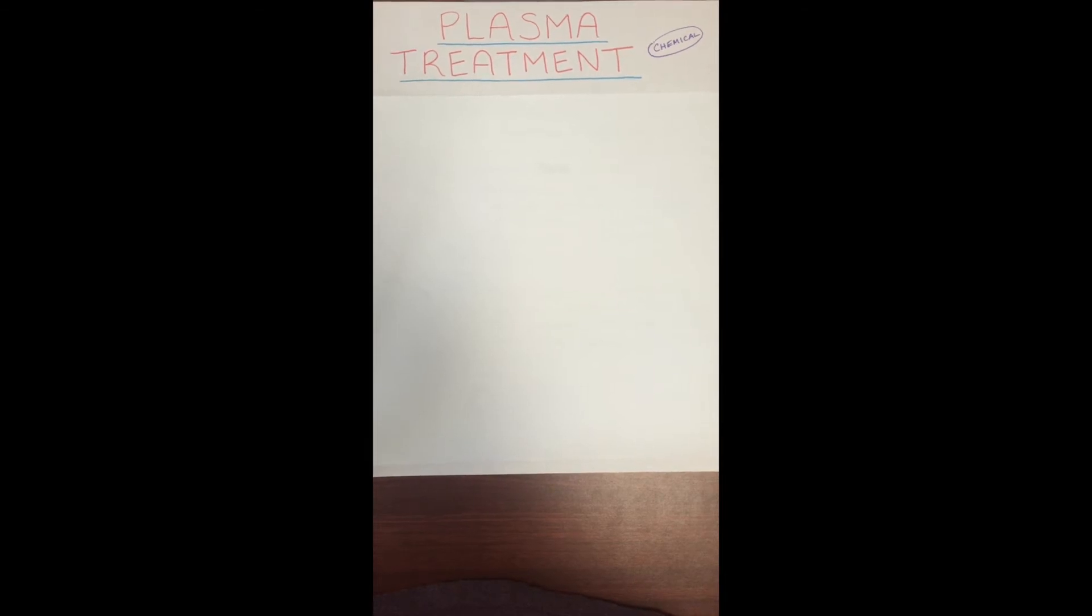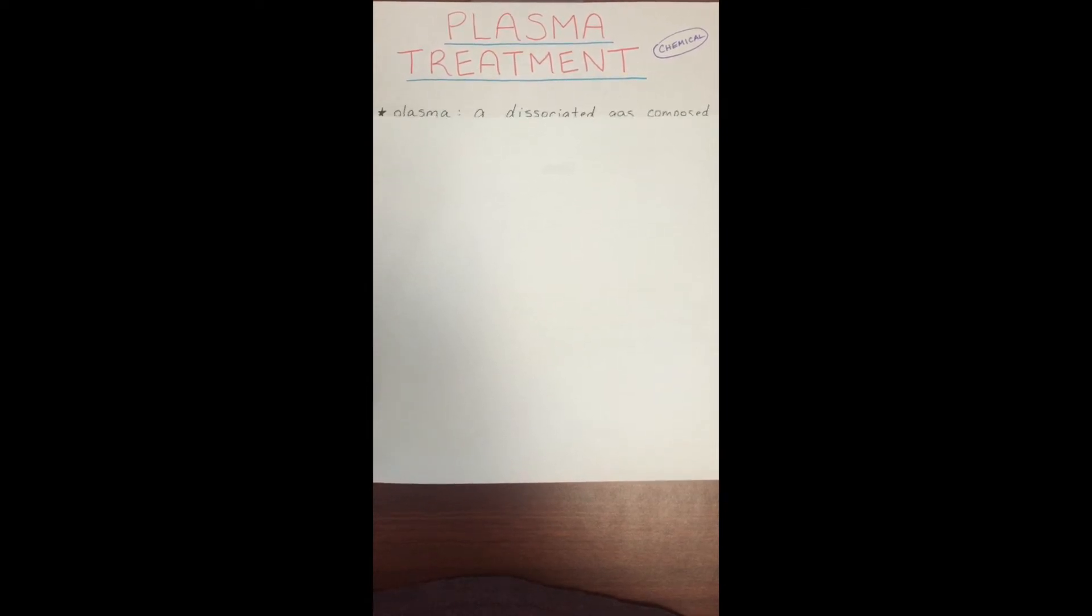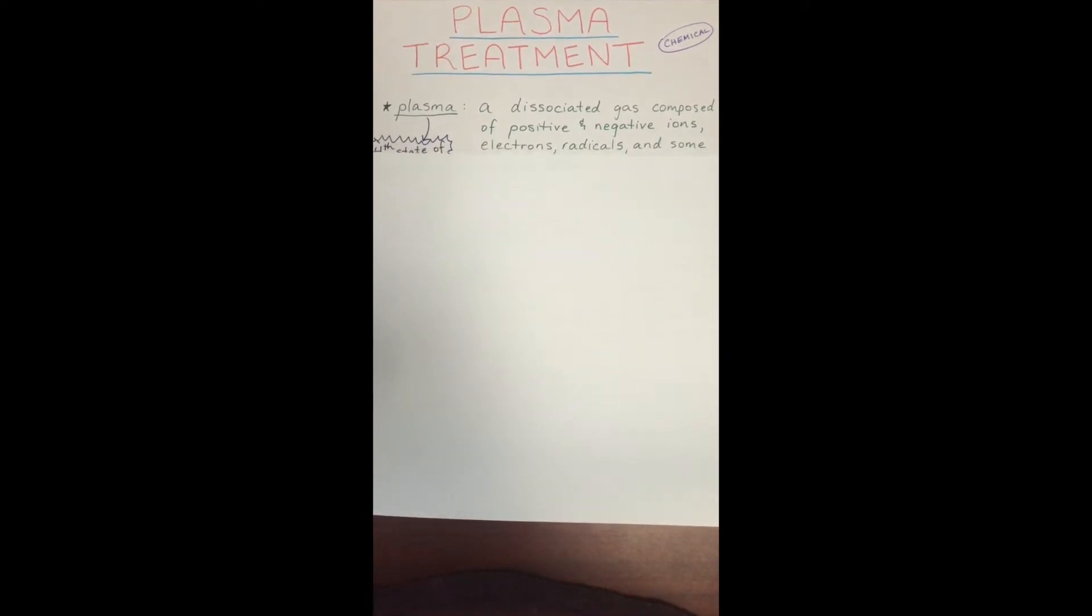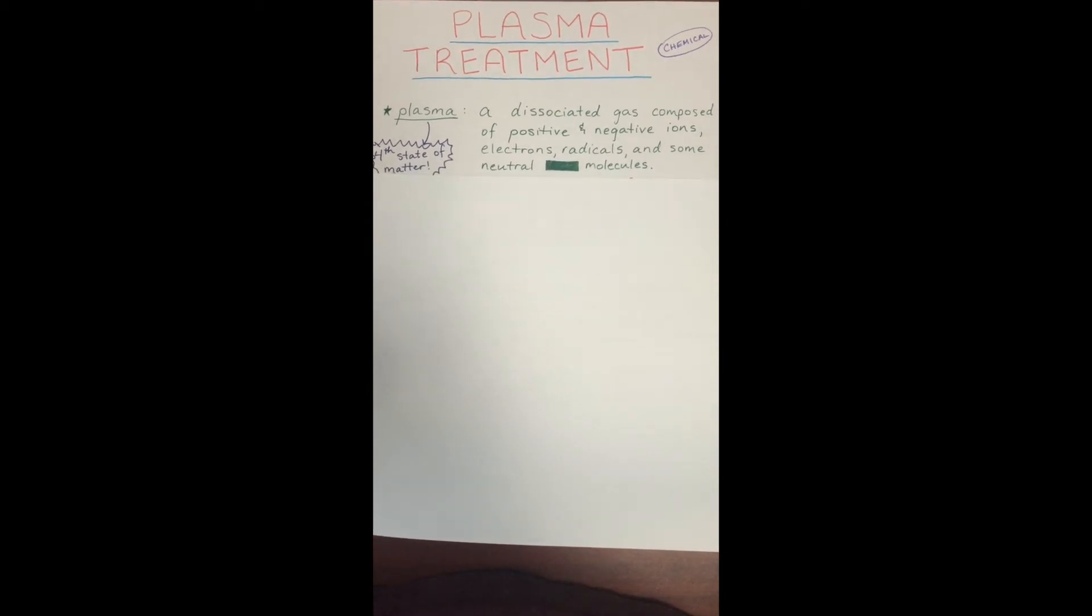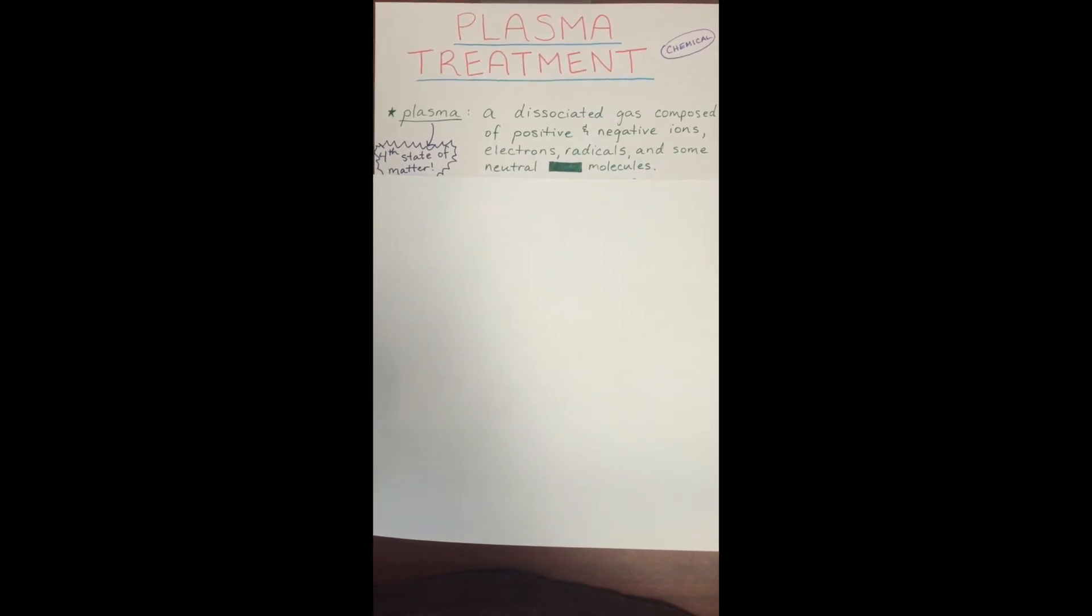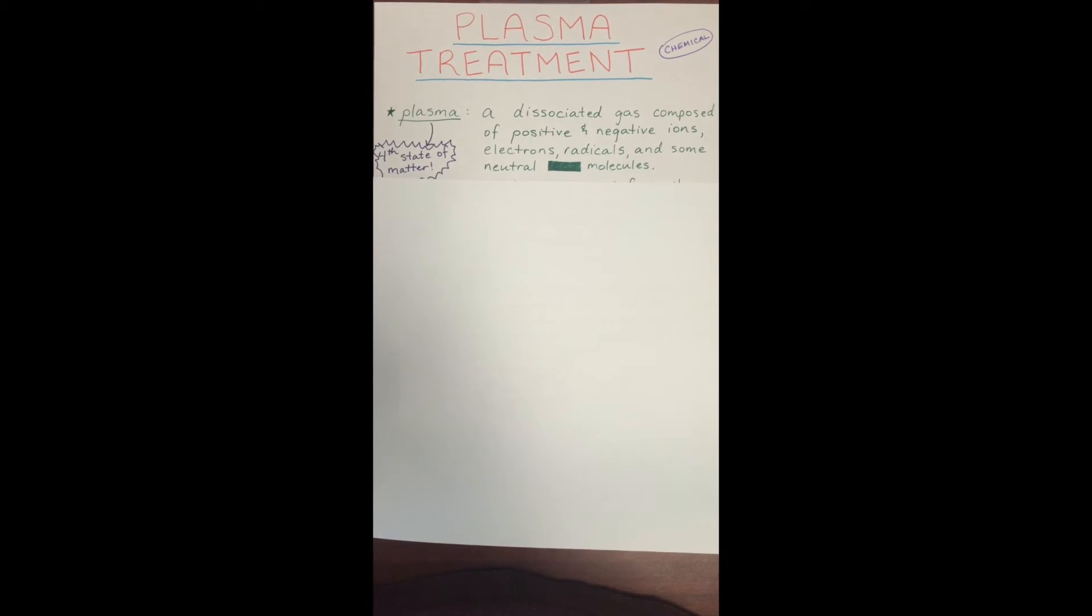Plasma treatment is a chemical modification, meaning it forms strong covalent bonds with the surface. But wait one minute, what is plasma? Is it the fourth state of matter? Not exactly. Plasma is defined as a dissociated gas composed of positive and negative ions, electrons, and some neutral molecules.